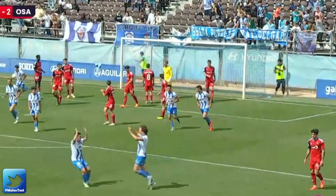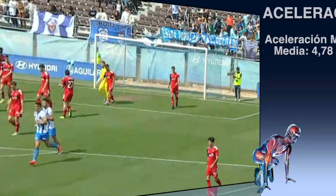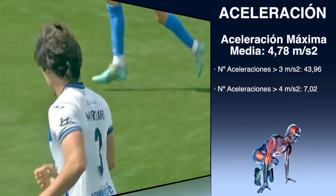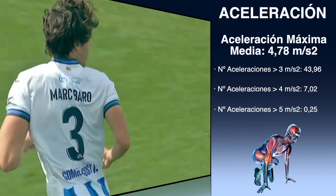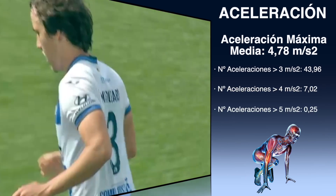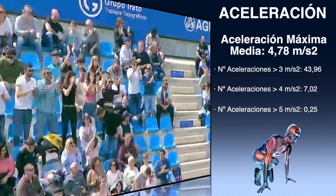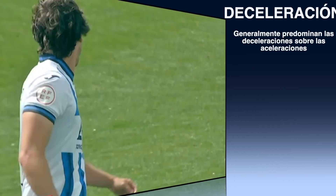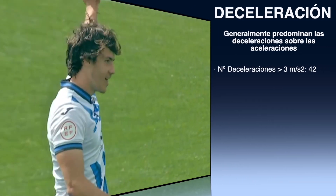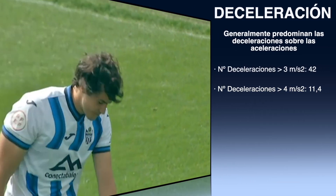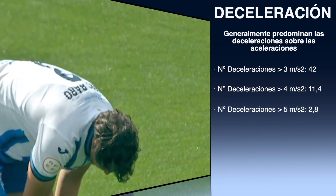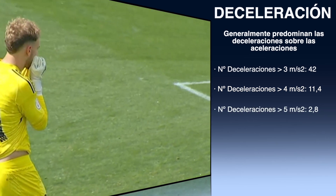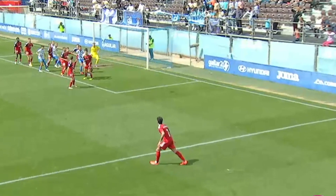Otro valor muy interesante para analizar son las aceleraciones y las deceleraciones. La aceleración máxima promediada por todos los futbolistas durante un partido está en torno a los 4,78 metros por segundo al cuadrado. En general, las deceleraciones son mayores tanto en cantidad como en valor, lo que significa que un futbolista frena más veces y con mayor intensidad que las que acelera.